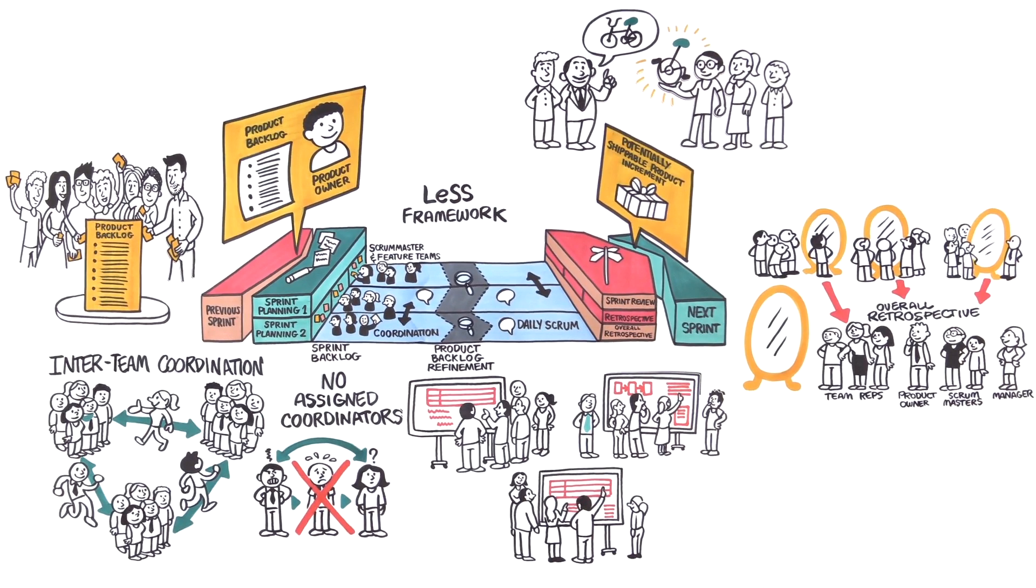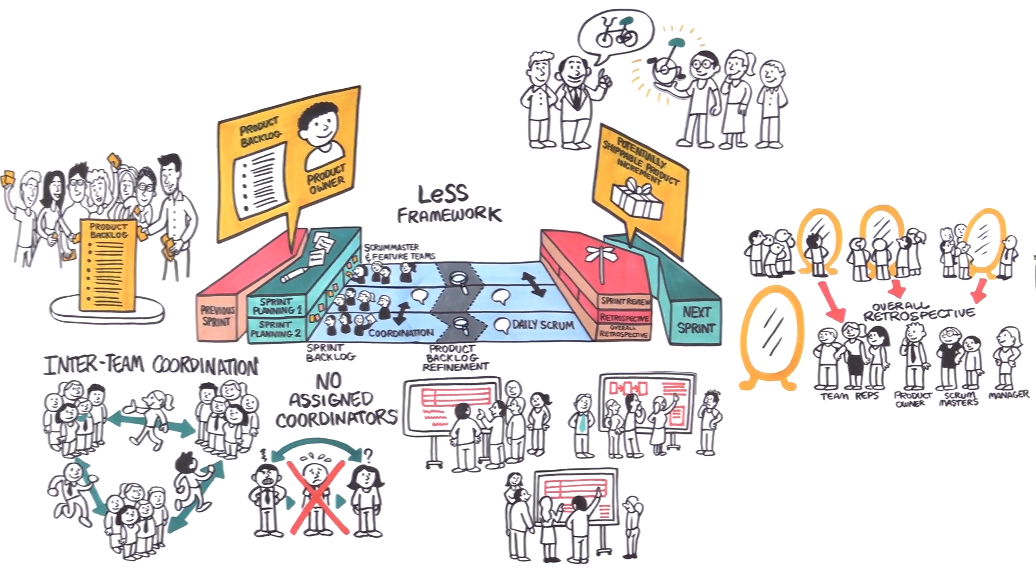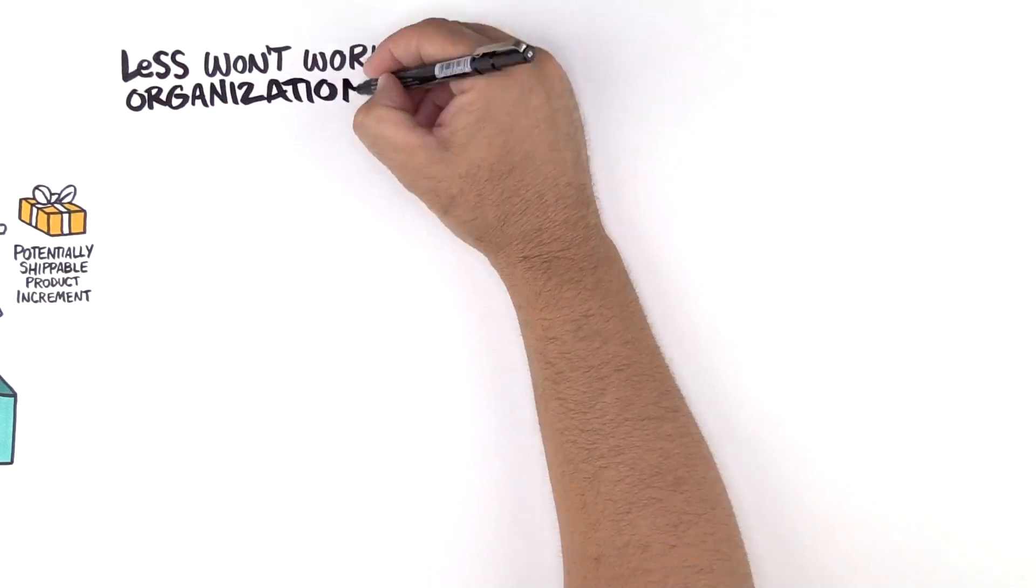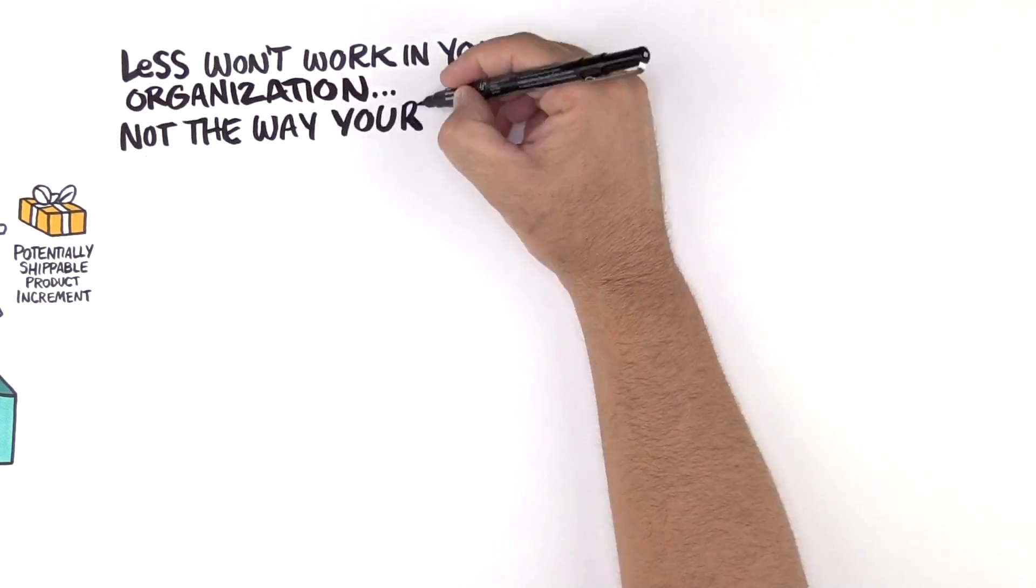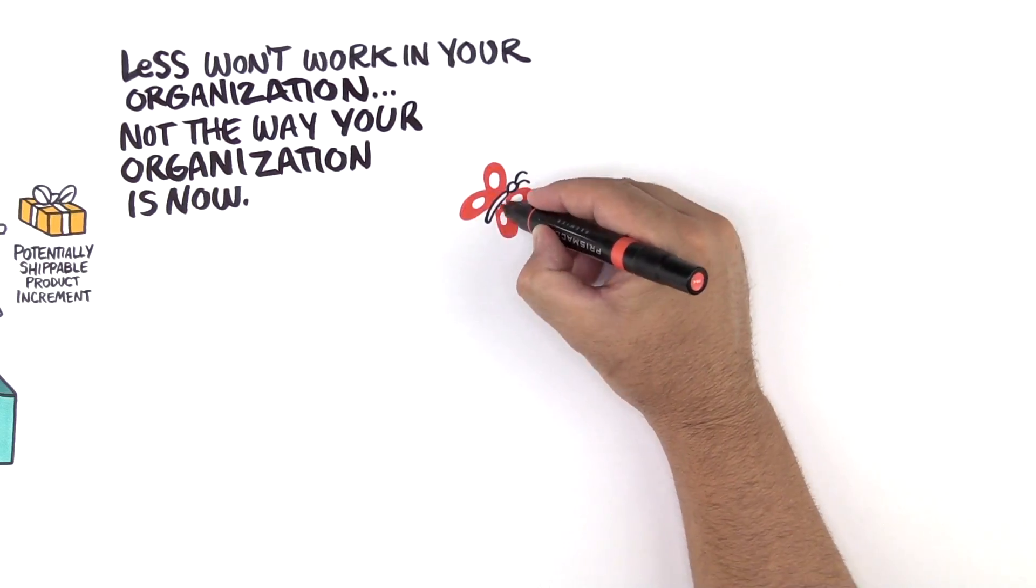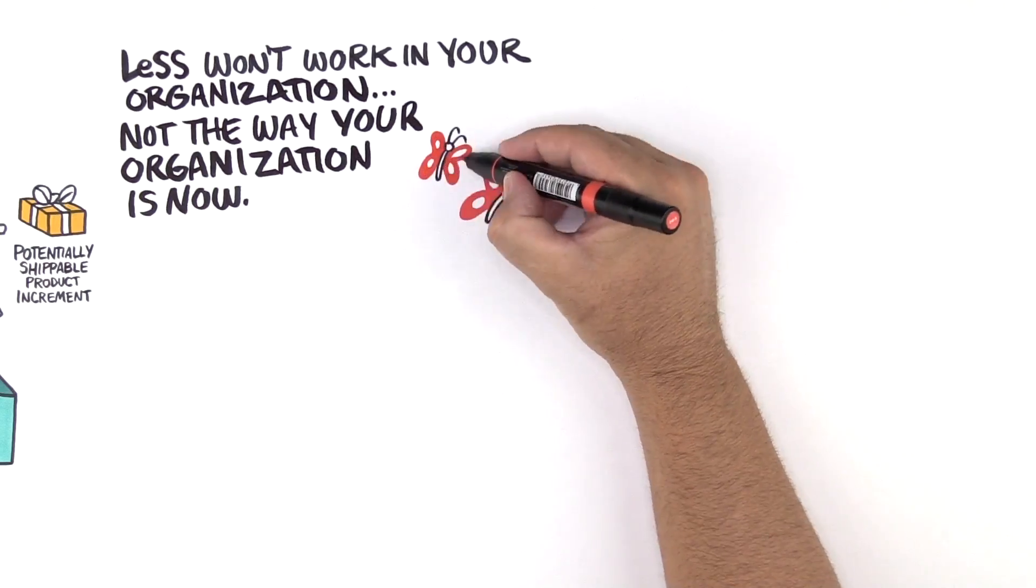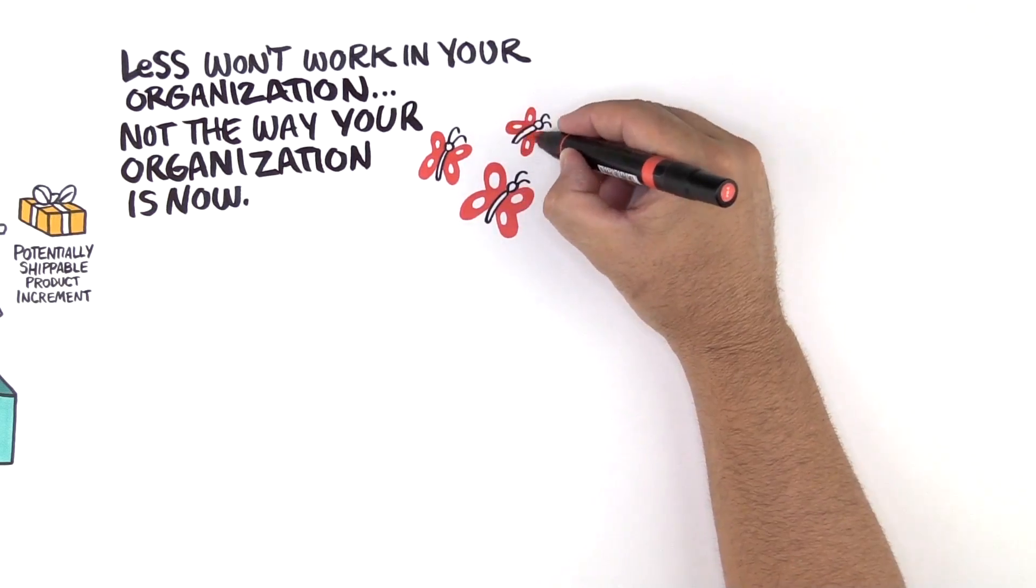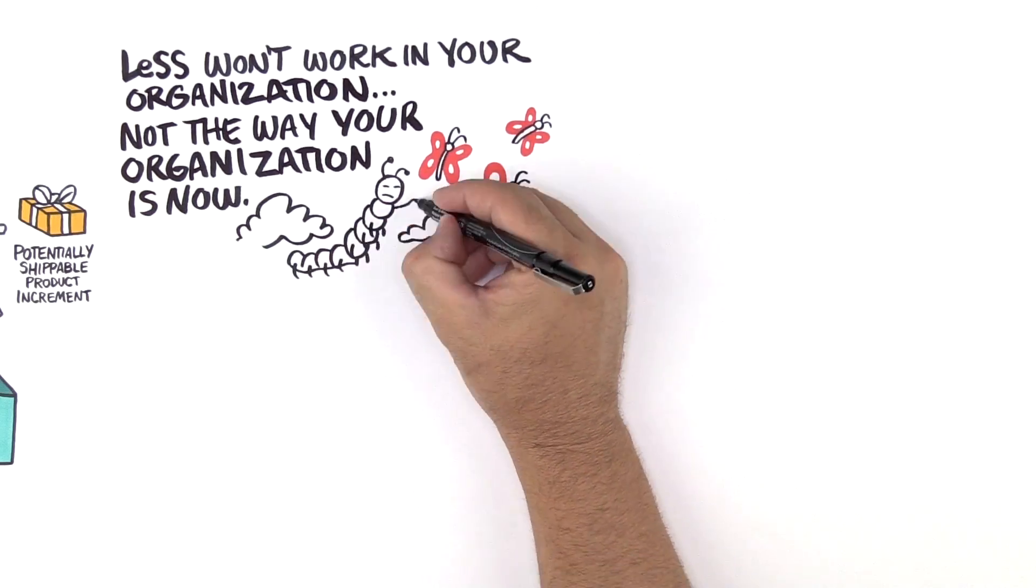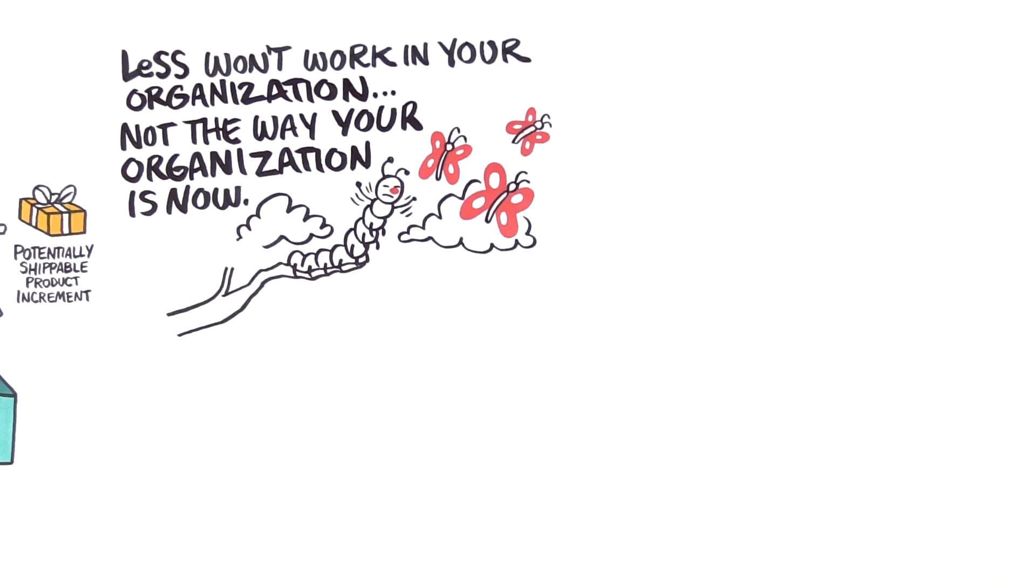But it won't work in your organization—not the way your organization is now. Your organization would have to change into one that allows it to work. This isn't quick or easy. You and your organization are currently designed to resist, undermine, and neutralize any steps toward real agility.